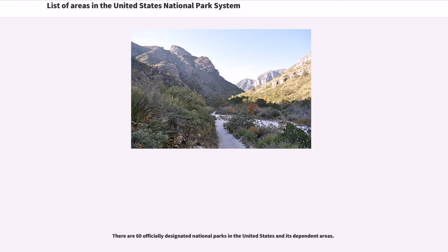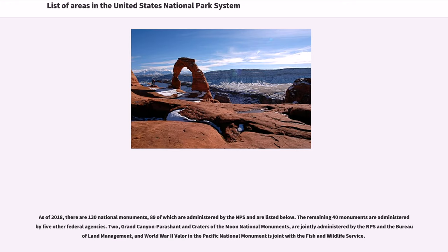There are 60 officially designated national parks in the United States and its dependent areas. As of 2018, there are 130 national monuments, 89 of which are administered by the NPS. The remaining 40 monuments are administered by five other federal agencies. Grand Canyon Parashant and Craters of the Moon National Monuments are jointly administered by the NPS and the Bureau of Land Management, and World War II Valor in the Pacific National Monument is joint with the Fish and Wildlife Service.